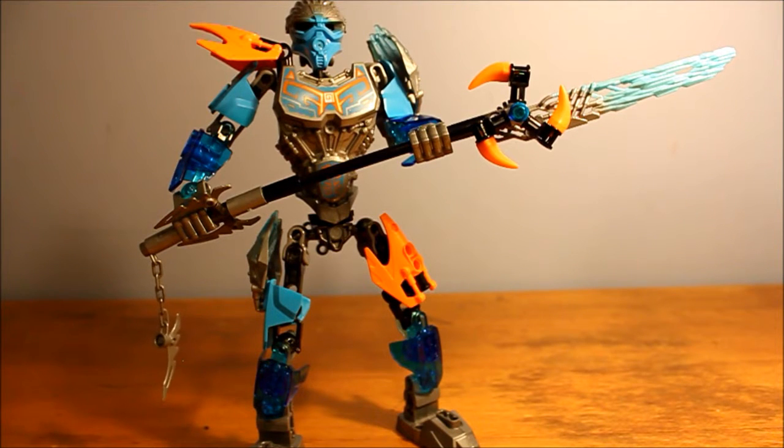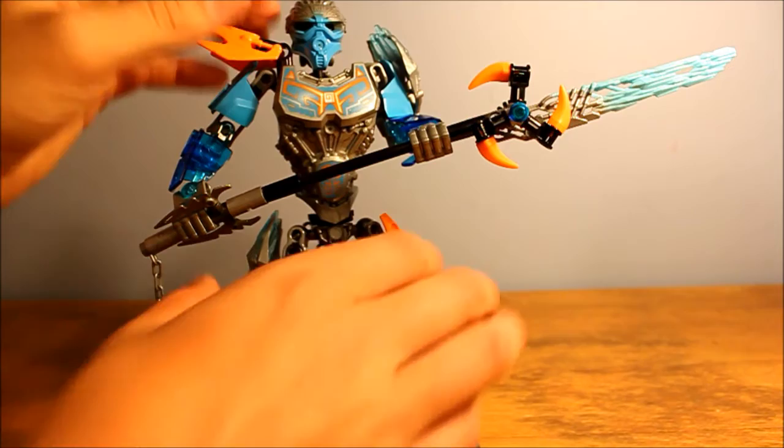So here's Gali, Uniter of Water. I think this Gali looks great too, just like her previous form. She looks good. Totally captures the female aspect of the character. I don't know how Lego does it, but they did it. And it looks great.